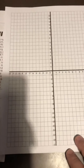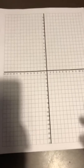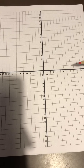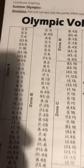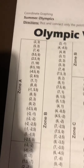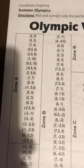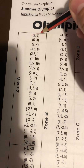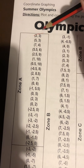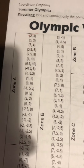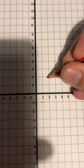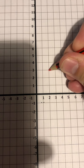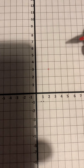So I'm going to try and do Zone A. This is my coordinate grid. My first coordinate in Zone A — let me show it a little bit closer — is (2, 3). I'll tick that off so I know I've done it, then I go across to 2 and up to 3. That's my first point.